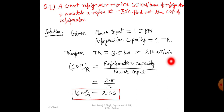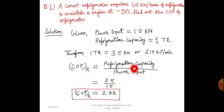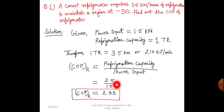The formula for coefficient of performance of a refrigerator is equal to refrigeration capacity divided by power input. So refrigeration capacity is 3.5 kilowatt and power input is 1.5 kilowatt. After solving this expression, we get coefficient of performance of refrigerator equal to 2.33.